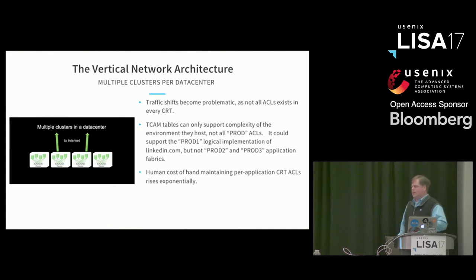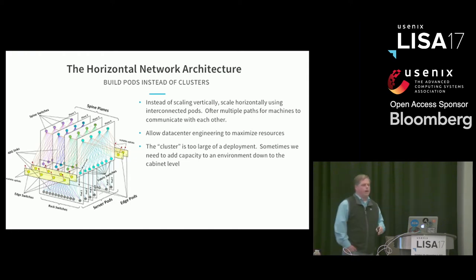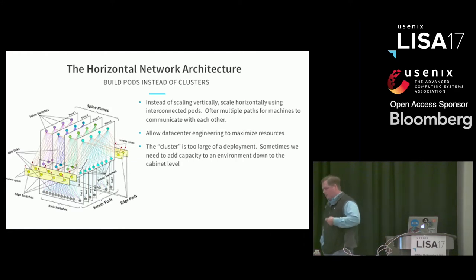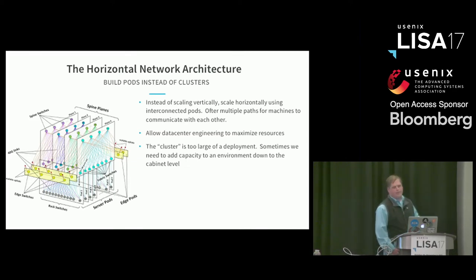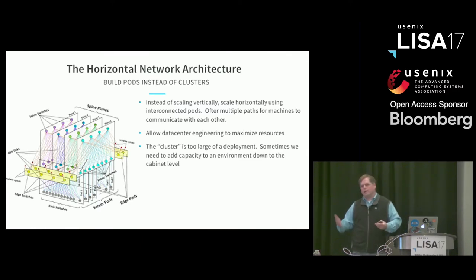Anytime we add a new data center or spin up a new facility, this became an event firing off tens of thousands of new ACL requests. The previous data centers needed to start trusting the new one. The complexity was rising astronomically as we tried to scale. This is the concept of a pod — instead of scaling vertically, we take smaller switches, provide multiple paths, and scale horizontally. One critical thing for LinkedIn: before, we were deploying massive clusters of 1,000 to 10,000 machines. In the data center we'd have space for two or three additional racks, but it wasn't enough to build a new cluster, so we abandoned that space.